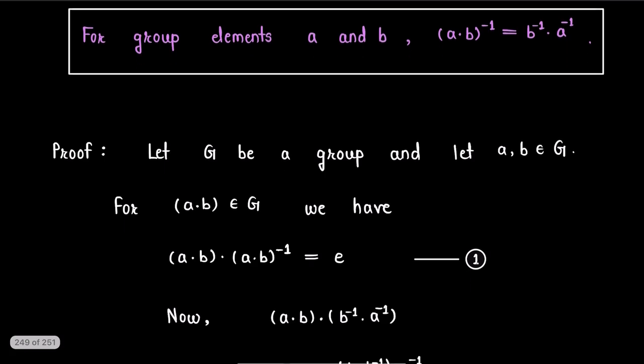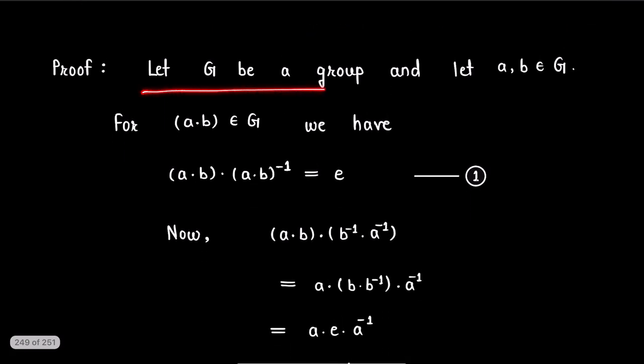Proof: Here G is a group and let a and b are any two elements of group G. Then as G is a group, a·b will be again some element of group G.